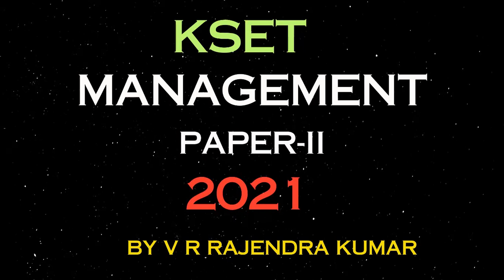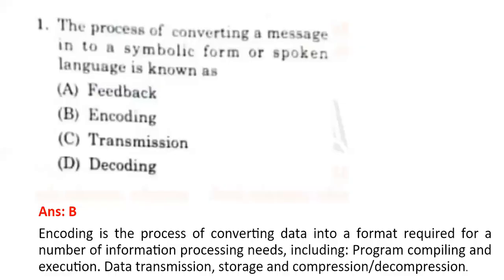Now let us do the review and see what are the answers for the different questions available in this paper. Totally there are 100 questions, each question consists of two marks, so totally it is for 200 marks. Let us do the review. The first question is: the process of converting a message into a symbolic form or spoken language is known as encoding.